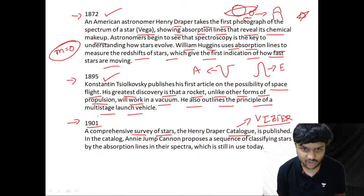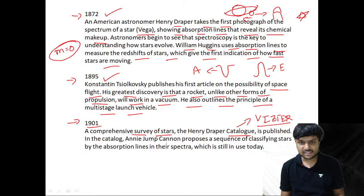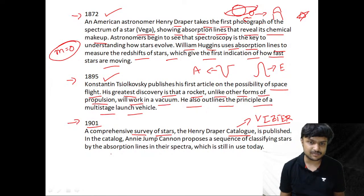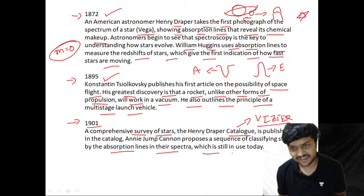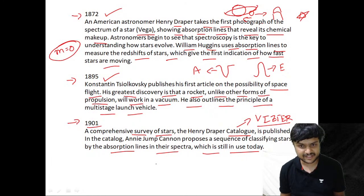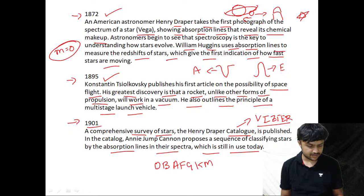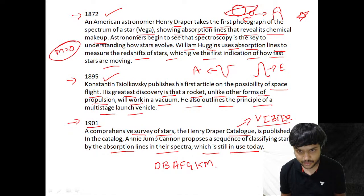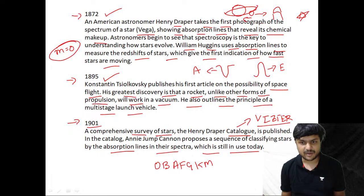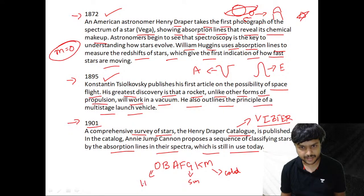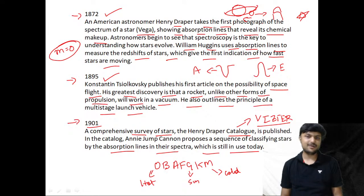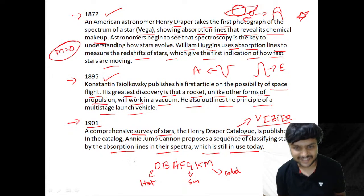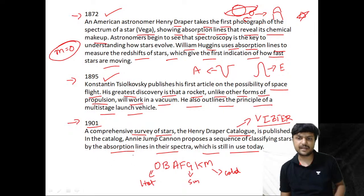Annie Jump Cannon proposes a sequence of classifying stars by absorption lines in their spectra, which is still in use today. The stellar classification is O, B, A, F, G, K, M — from the hottest star O to the coolest star M. Our Sun is a G-type star. The mnemonic to remember this is: 'Oh Be A Fine Guy/Girl Kiss Me.'